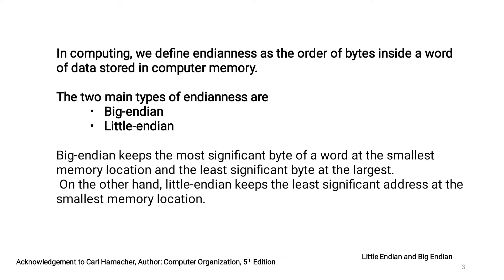In computing, Endianness is defined as the order of bytes of a word in which they are stored in memory. A word has multiple bytes, and the order in which these bytes are stored in memory is called Endianness. There are two main types of Endianness: Big Endian and Little Endian.